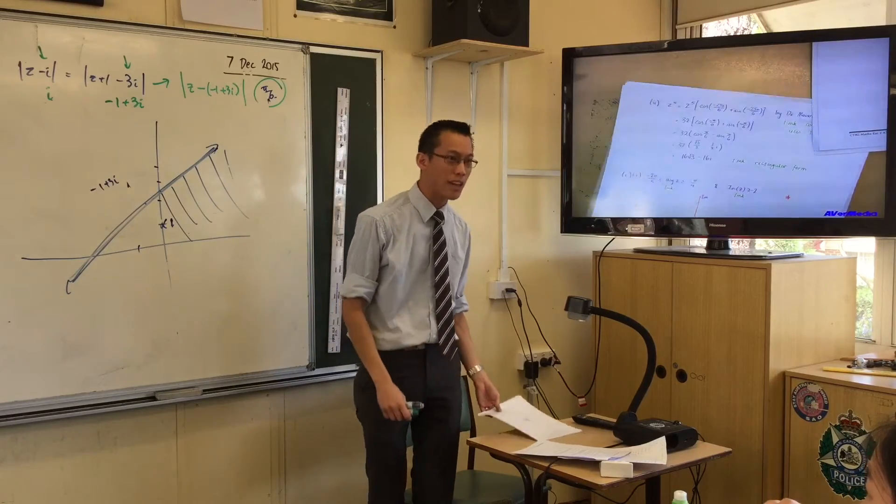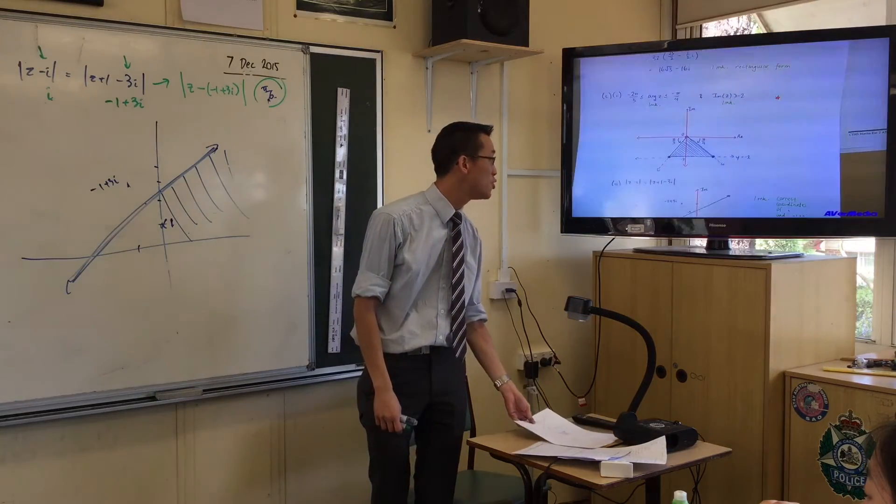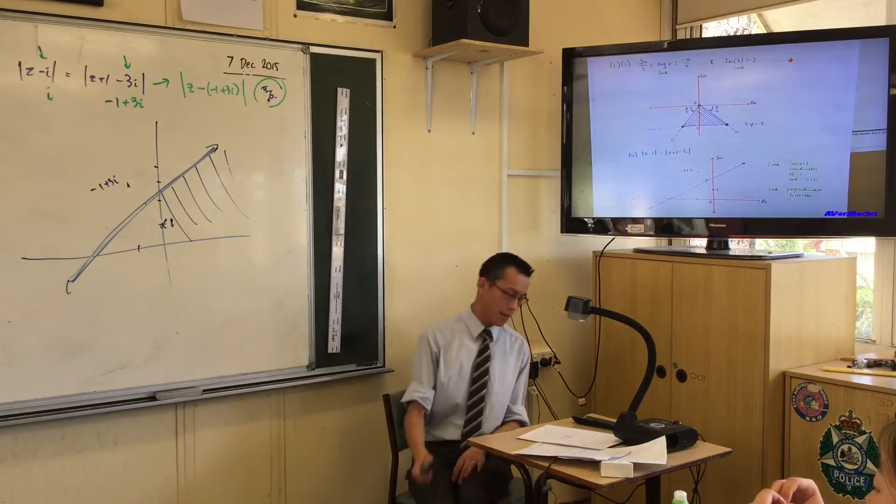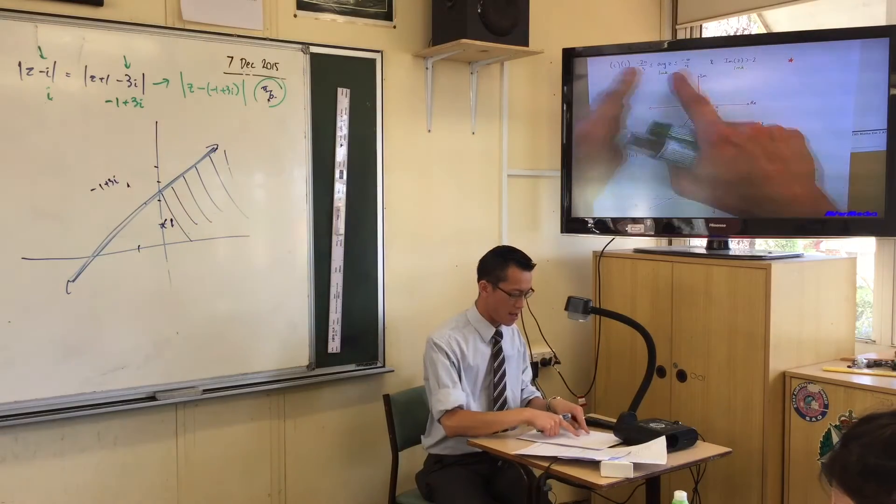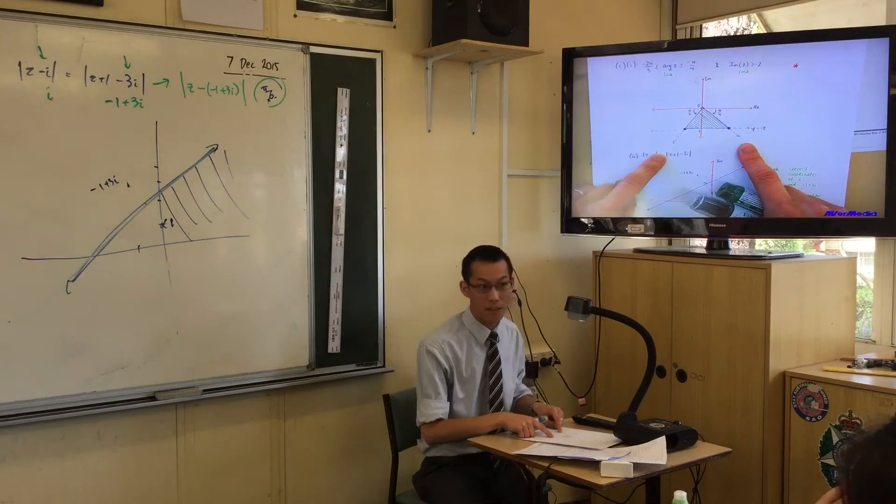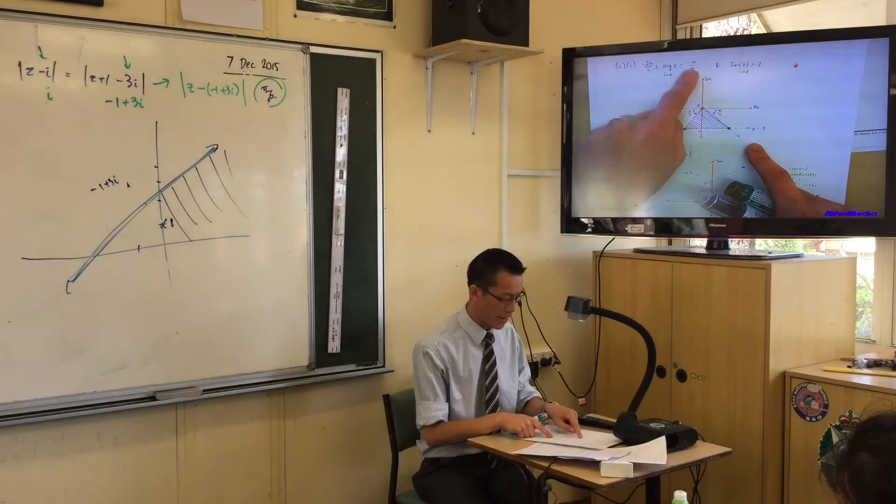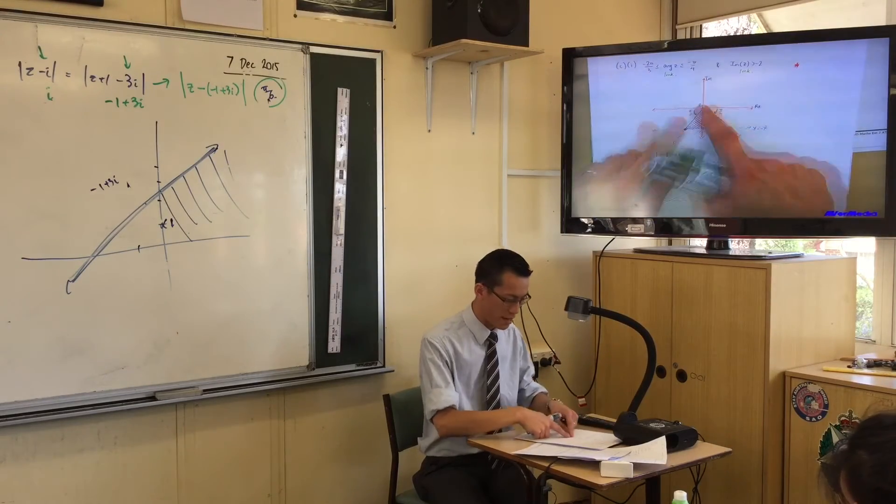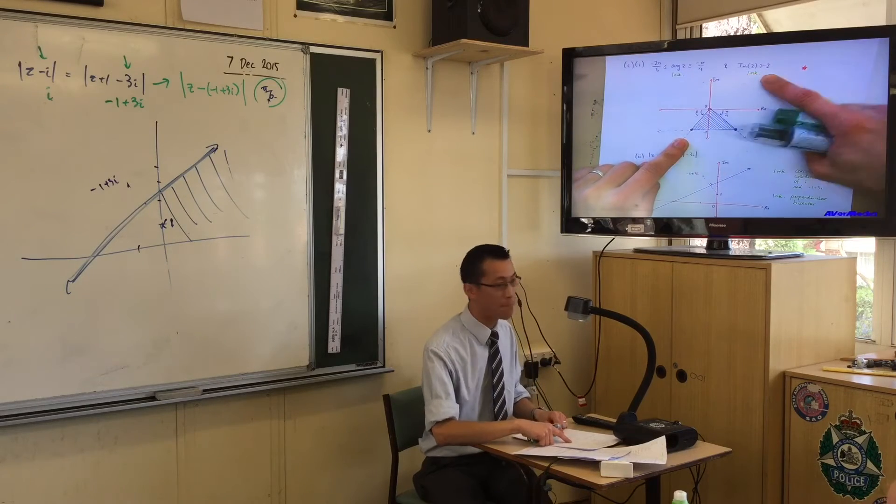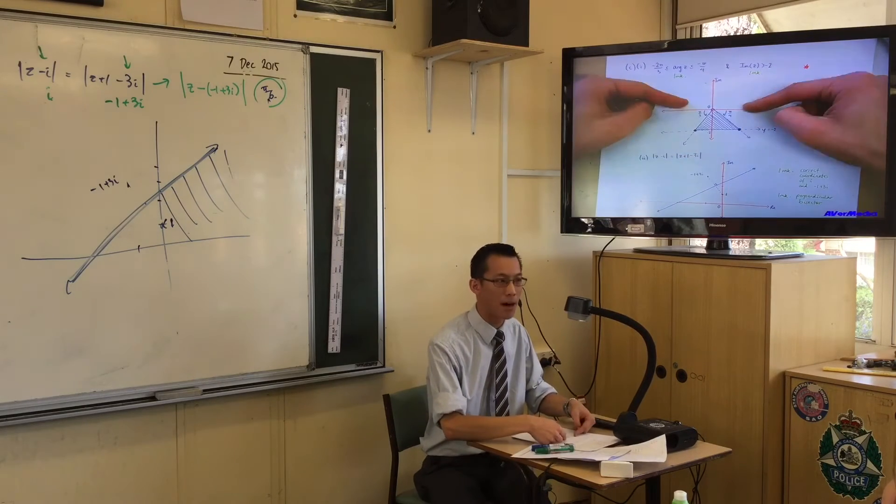Now, have a look at what the real answer was, which almost no one did for part 1. Firstly, let's do the easy part. You've got this argument, this pair of arguments. So you're between minus 2π/3 and between minus π/4. So you're in this little region here. And then the imaginary part has to be above negative 2. No big deal, I'm above.